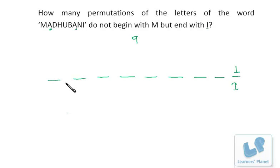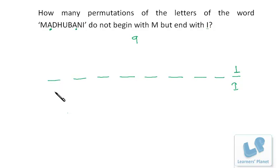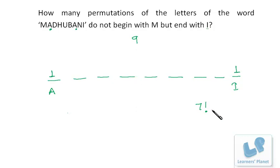For the first position, M cannot come. Since I is already placed, we are left with seven choices. Out of these seven choices, we have two A's. Case 1: the first position is occupied by A — we have just one choice for it. Then positions 2 through 8 have seven letters with no repetition, so there are 7! arrangements, since only one A remains among the middle letters.